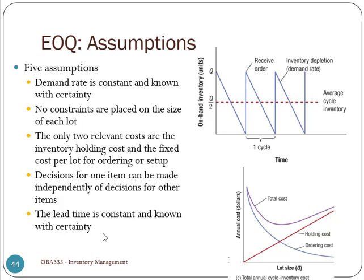Lastly, the lead time is constant and known with certainty. That is how we can time the receiving of a new order exactly when we've used up the last unit of the previous shipment. This lead time must be known and it never changes — that's how we can time things precisely in this way.